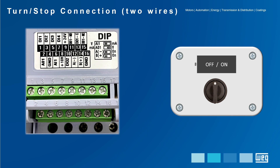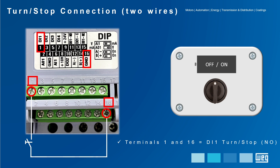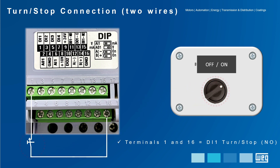By identifying the terminals of the respective digital input which will be used for this function, in this example we will use digital input DI1, connecting to terminals 1 and 16 to connect the normally open contact. This means when switching, it will close its normally open contact, transmitting a signal to digital input DI1.